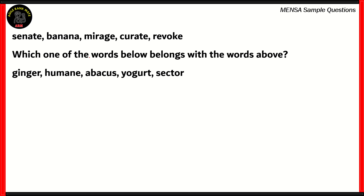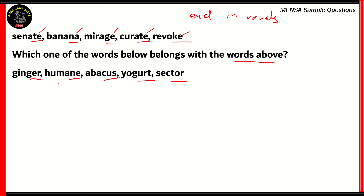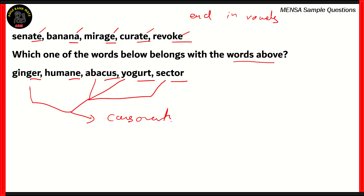Now let's look at a question on words. We have the words Senate, Banana, Mirage, Curate, Revoke. Which one of the words below belongs with the words above? The options are Ginger, Humane, Abacus, Yogurt, Sector. If you look at the words above, they all end in a vowel sound — Senate ends in E, Banana ends in A, Mirage ends in E, Curate ends in E, Revoke ends in E. The common link between these words is that they end in vowels. Ginger, Abacus, Yogurt, and Sector all end in consonants. So Humane is the only word that belongs with the words above.